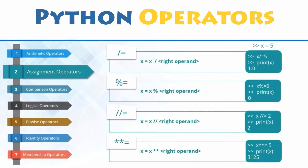Assignment operators are used to assign values to the variables or any other object in Python. For instance, x equals 5 is a simple assignment operator that assigns the value 5 on the right to the variable x on the left. There are also multiple compound operators in Python, like x plus equals 5, that adds to the variable and later assigns the same. Therefore, this is the equivalent of x equals x plus 5.